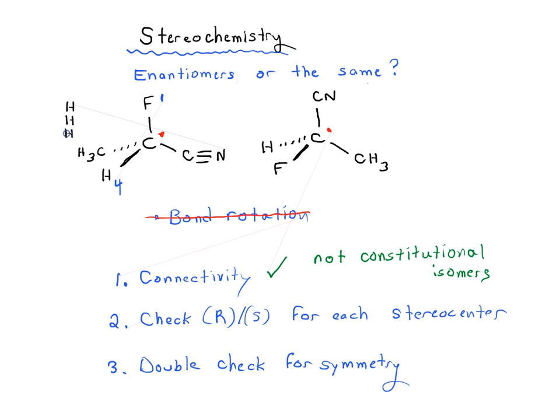In the case of the CH3, it's attached to H, H, and H. In the case of this carbon over here, it's attached to nitrogen, but we actually count each of these bonds to nitrogen - for every bond we count another nitrogen here. So nitrogen, nitrogen, nitrogen, even though there's only one nitrogen attached - they're kind of phantom nitrogens. So nitrogen has a higher atomic number than hydrogen, so this is going to be number two and CH3 is number three.